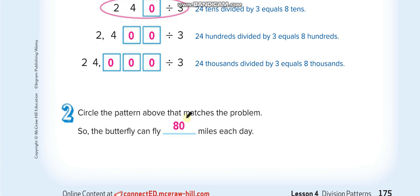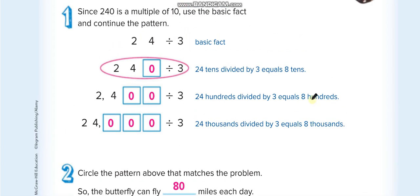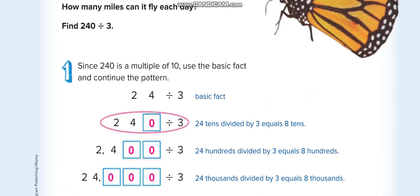Here it is — 8 tens is 80. Similarly, if you have two zeros it's 800 — 8 hundreds — and if you have three zeros it's 8,000. But in this question you have zeros on only one side.